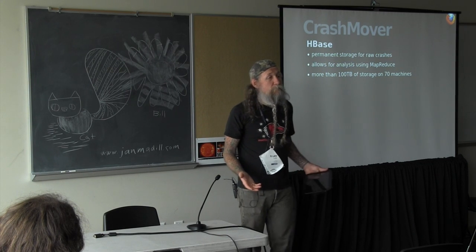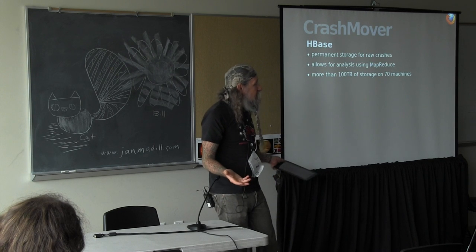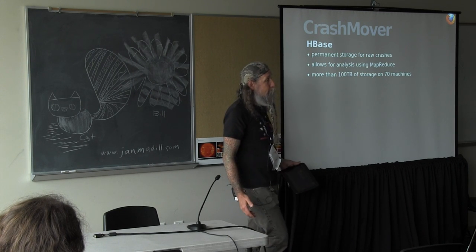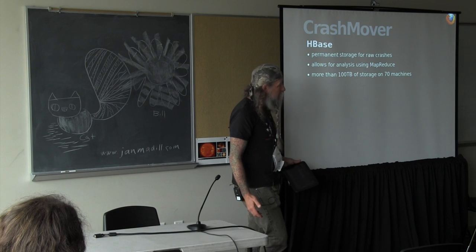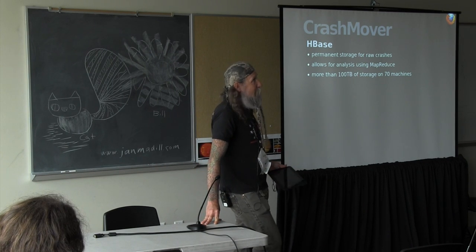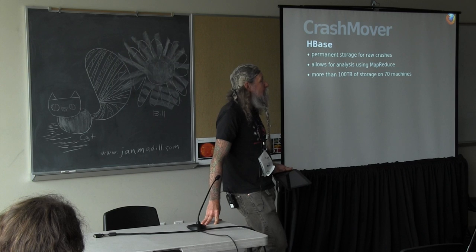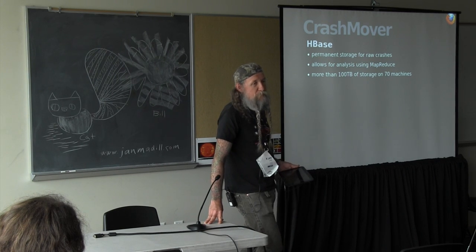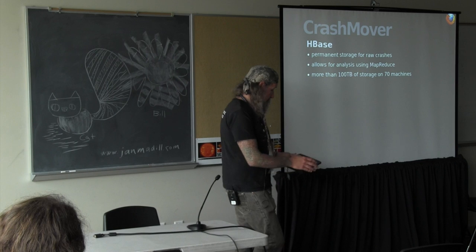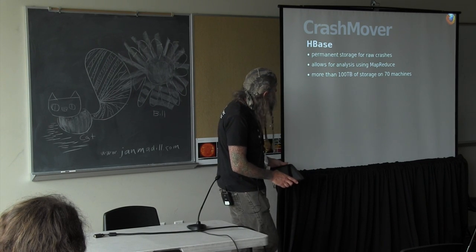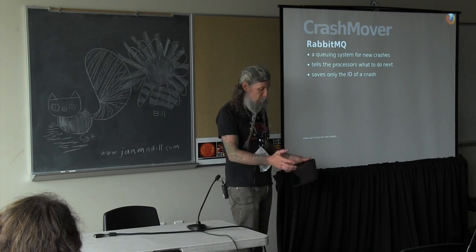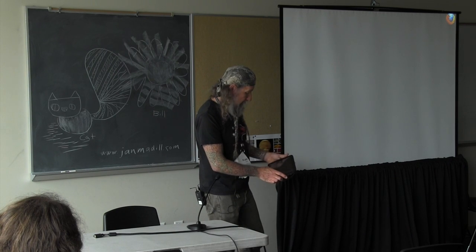HBase is our permanent storage for raw crashes. It's essentially a key-value store on top of Hadoop. We have 70 machines dedicated to HBase, covering multiple terabytes of crash data. We try to eventually store all our crashes forever, but right now we store about three months' worth — about 100 terabytes of data at the moment. RabbitMQ is a queuing system that tells the processors what to do next and saves only the crash ID.